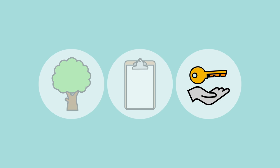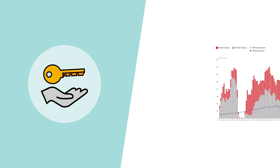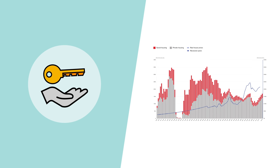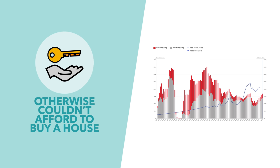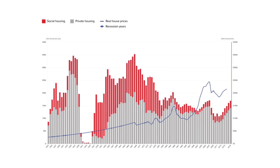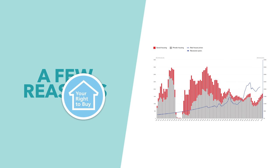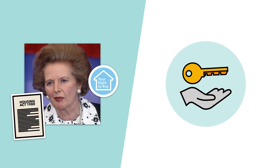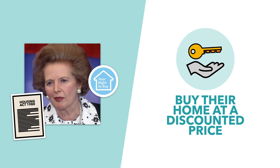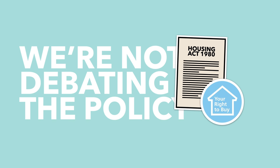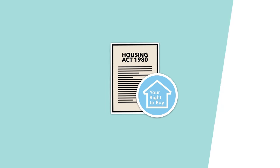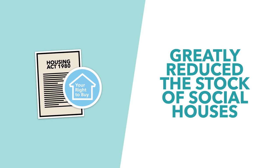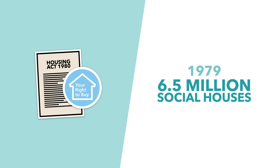The last reason is the collapse in social housing. From the end of World War II until the late 1970s, the government built about 100,000 social housing units each year for people who couldn't otherwise afford housing. Since then it's dropped to about zero. First, there was right to buy — a policy introduced by Thatcher in the 1980 Housing Act — which meant social housing tenants could buy their houses at a discount, massively reducing the total social housing stock from 6.5 million units in 1979 to roughly 2 million in 2017.